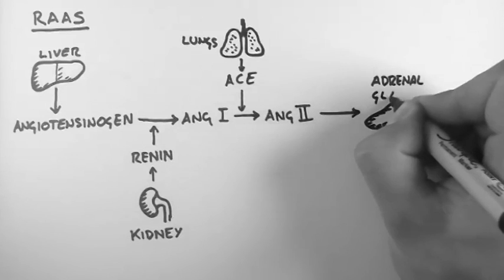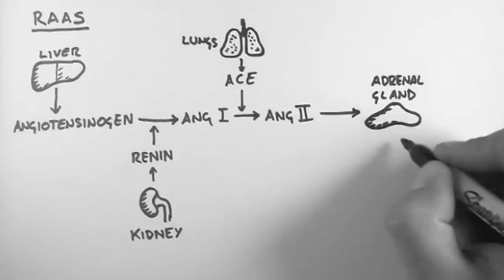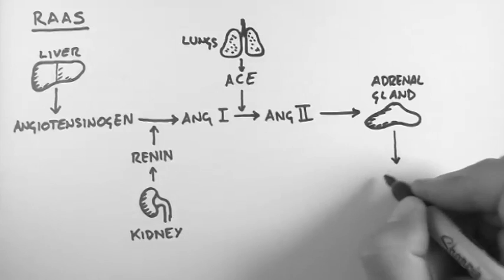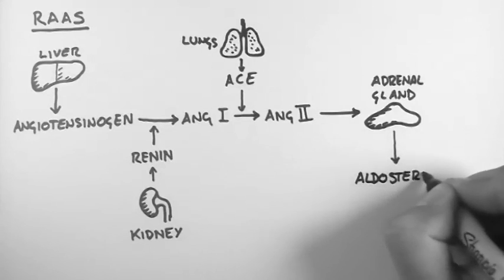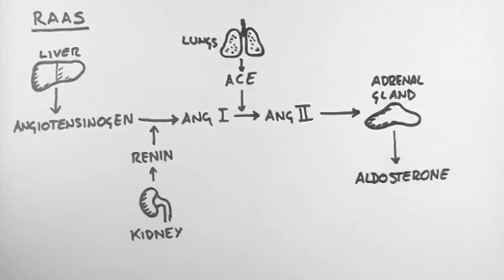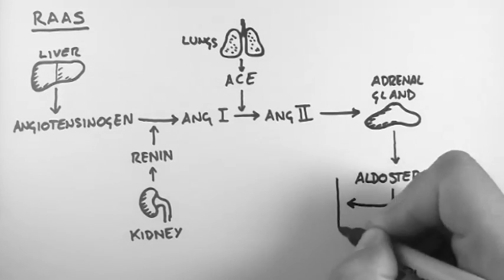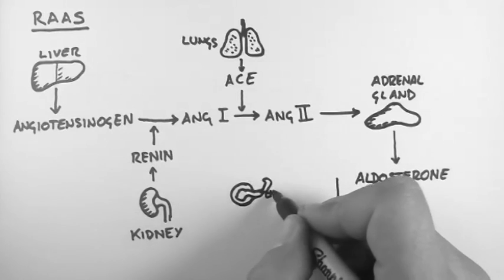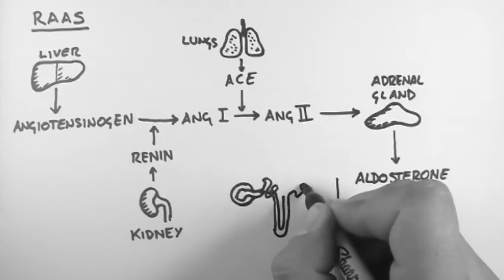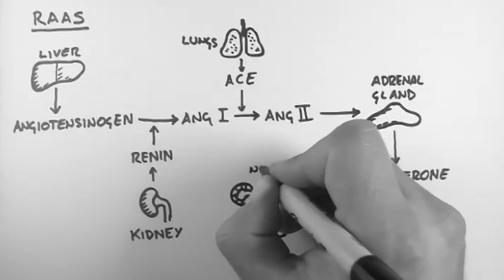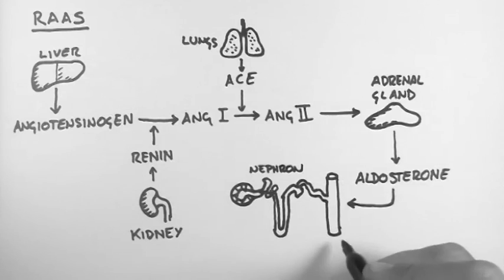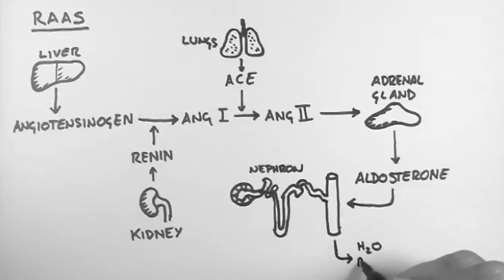Angiotensin 2 acts on the adrenal gland and causes it to release aldosterone, which is a steroid hormone. Aldosterone then acts on the collecting ducts of the nephron, within the kidney.